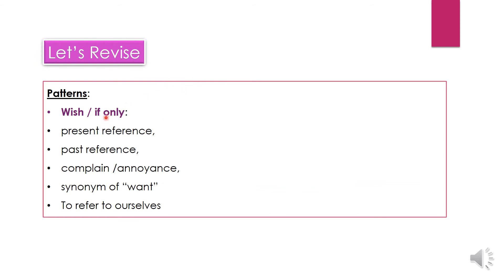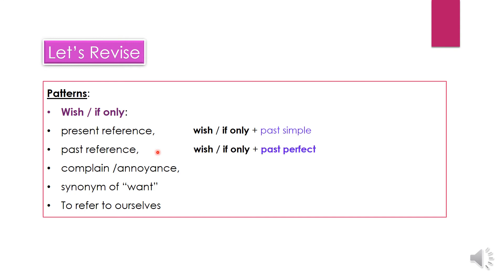Let's revise the patterns. Wish and if only — which tense do we use to express present reference? We use past simple to express present reference. What about past reference? Past perfect. What about complaint or annoyance? We use 'would'. It's very important to keep in mind that we use 'would' to refer to someone else's behavior, not ourselves.